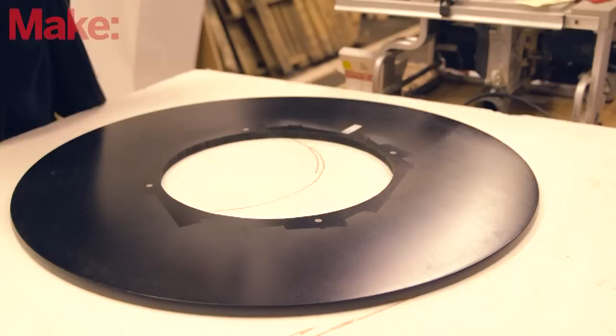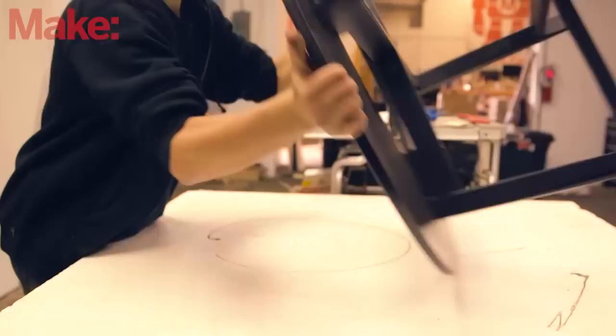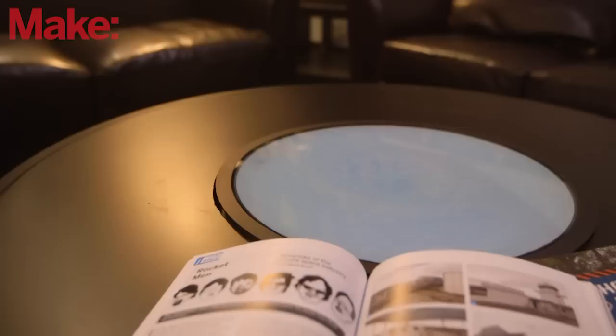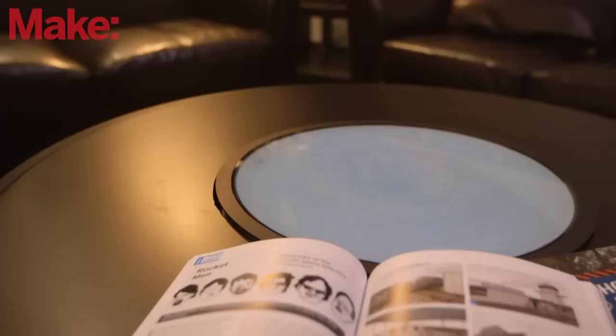Assemble the legs of the table according to the manufacturer's instructions. Attaching the legs to the table surface is much easier if you do it while the table is face down. Flip the table over, and then place the rheoscopic disc into the recess in the modified table. Your rheoscopic coffee table is ready to enjoy.